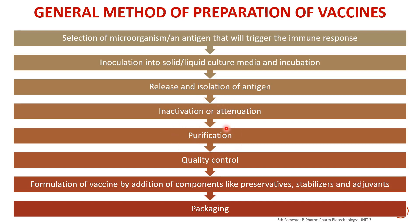The next step is purification of the antigen. Before packaging or marketing, we must perform quality control tests including potency tests to verify effectiveness, safety tests, toxicity tests, and sterility testing to confirm the vaccine contains no live contaminant microorganisms. Finally, we proceed to formulation of the vaccine by addition of components like preservatives, stabilizers, and adjuvants.